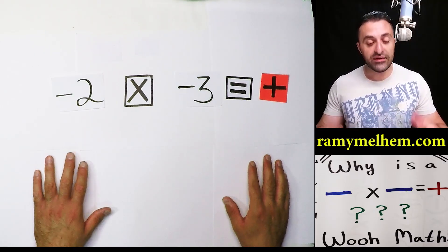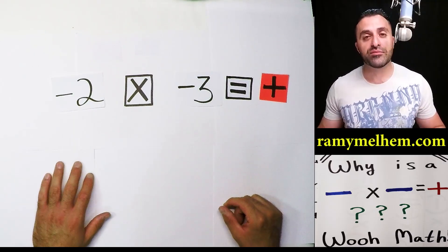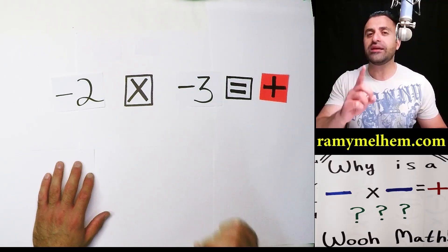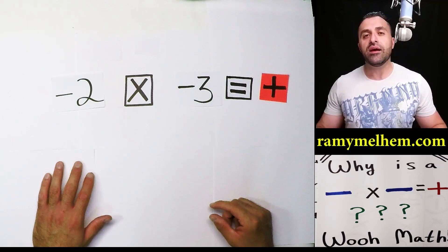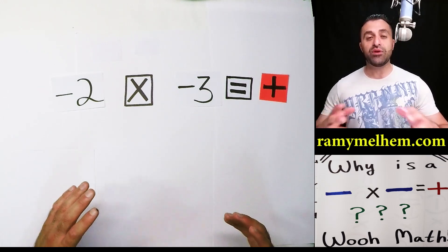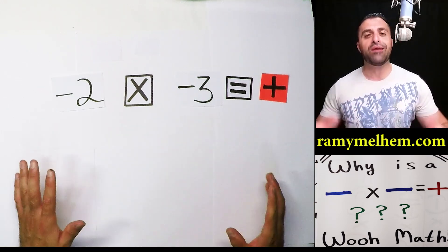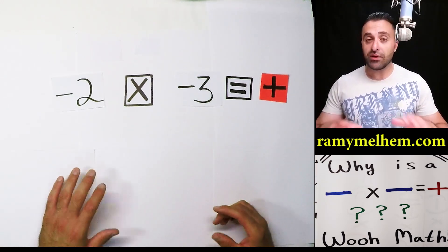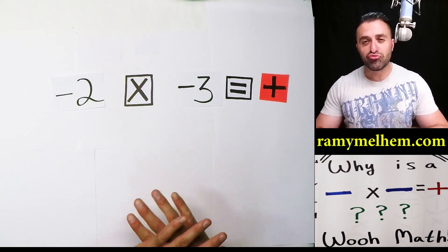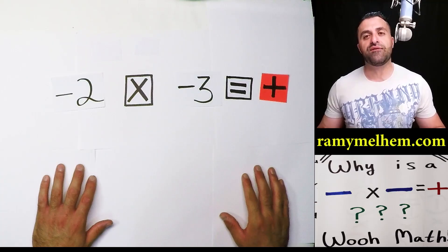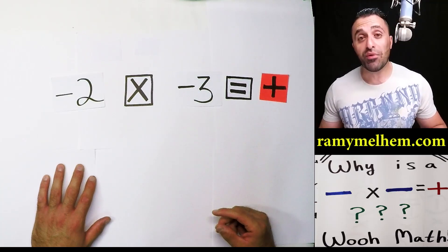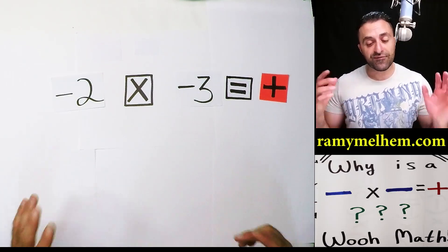There are so many examples of negative numbers being multiplied. I'm going to show you one example today involving something we use every day, which is money. And I'm going to make it extremely visual for you. I'm going to break this lesson up into two parts.